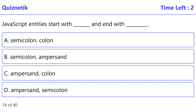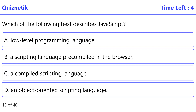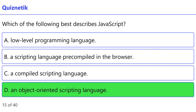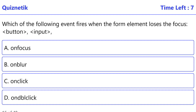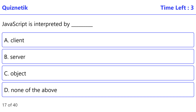JavaScript entities start and end with what? Correct option is D: ampersand and semicolon. Which of the following best describes JavaScript? Correct option is D: an object-oriented scripting language. Which of the following events fires when the form element loses focus — button, input, label, select, textarea? Correct option is B: onblur.